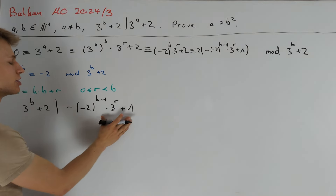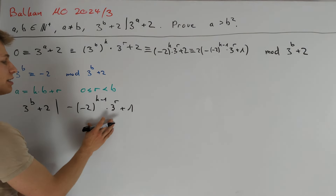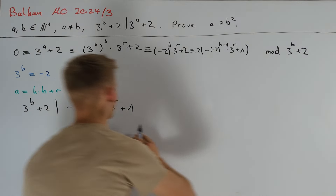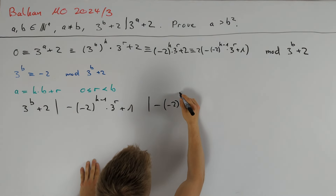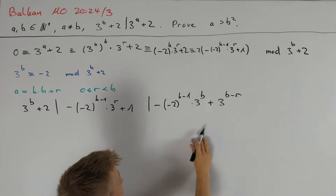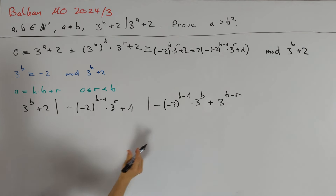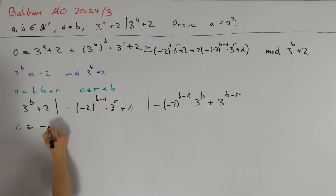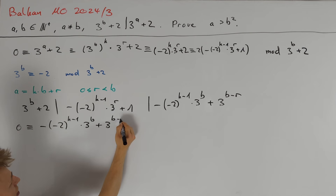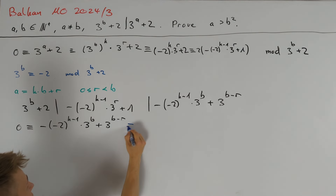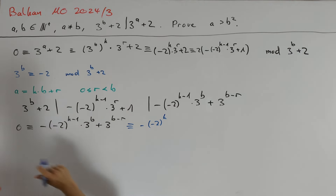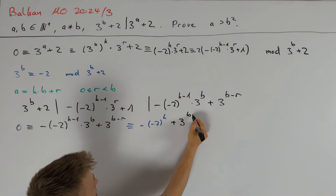Our goal is to get this number as small as possible, so we multiply by 3 to the power of b minus r in order to move the power of 3 to our second sum. We get that 3 to the power of b plus 2 divides minus 2 to the power of k minus 1 times 3 to the power of b, plus 3 to the power of b minus r. This gives 0 congruent to minus 2 to the power of k minus 1 times 3 to the power of b plus 3 to the power of b minus r, which simplifies to minus minus 2 to the power of k plus 3 to the power of b minus r.